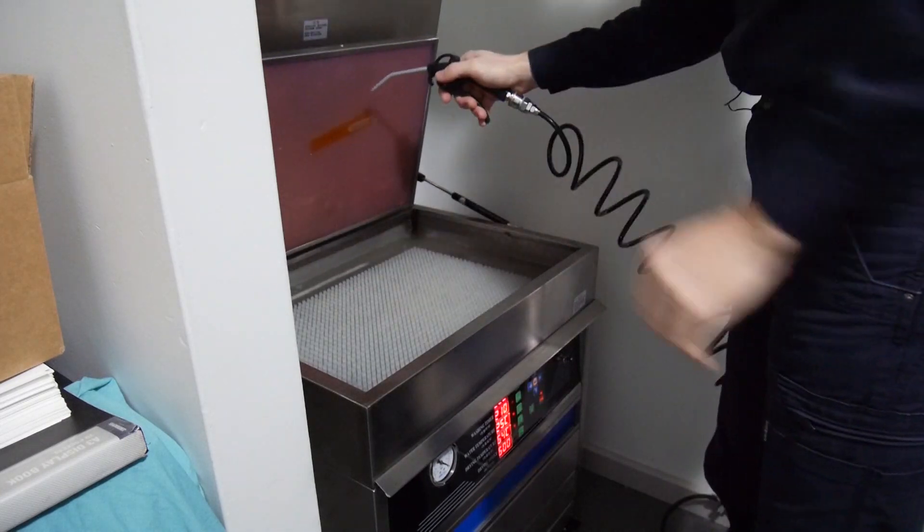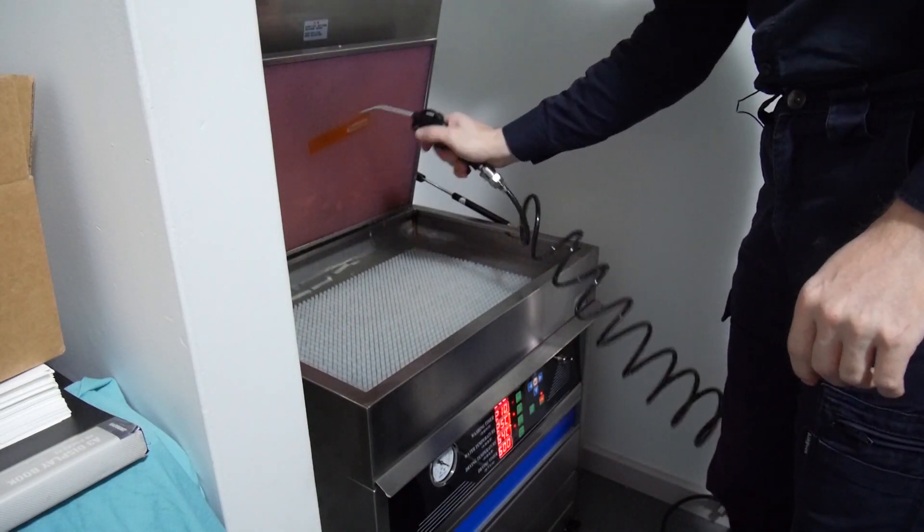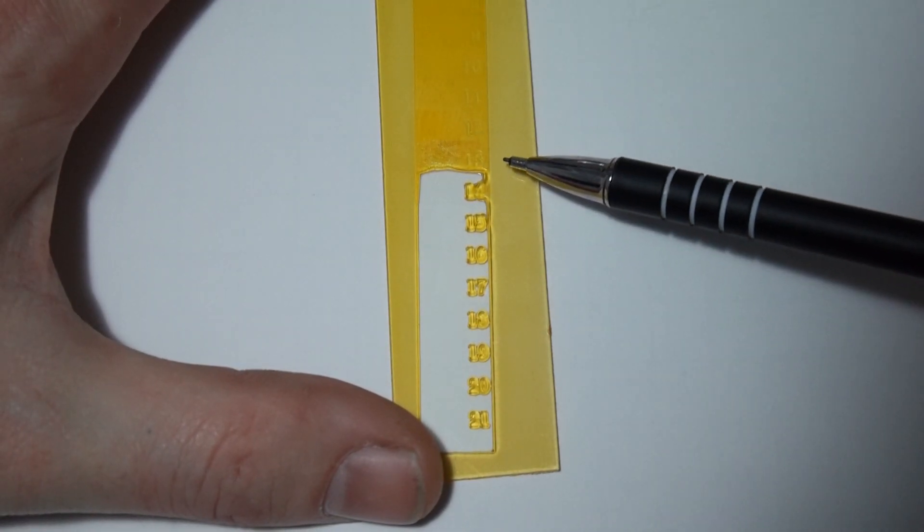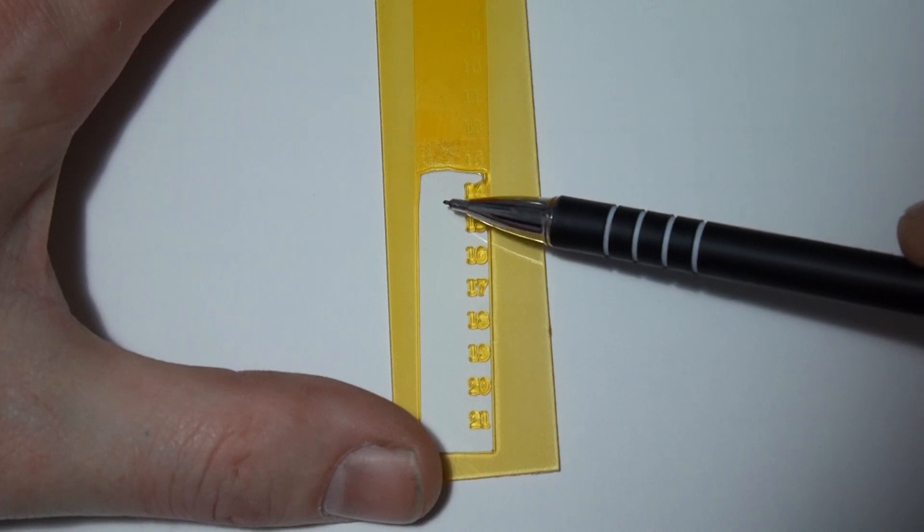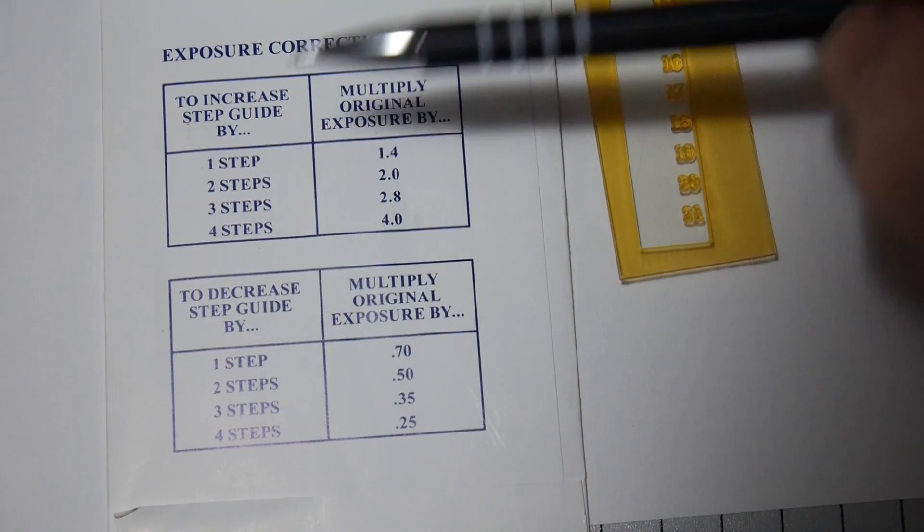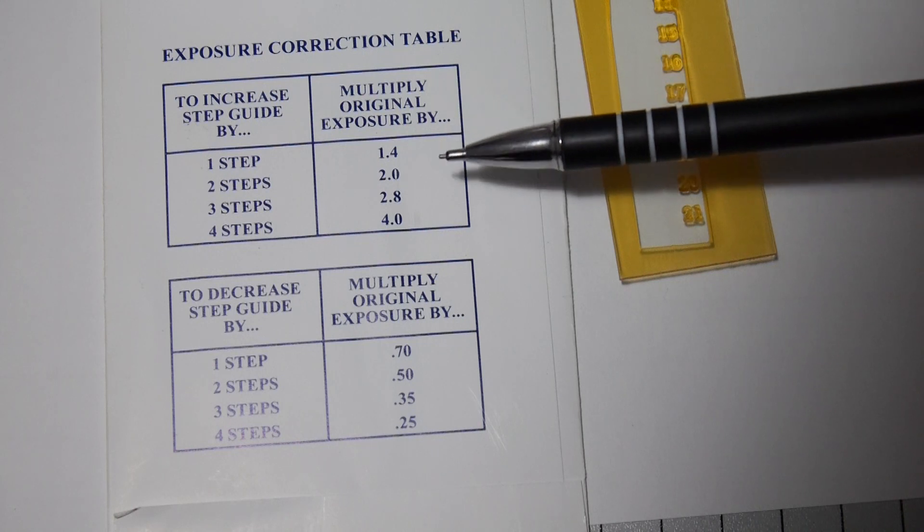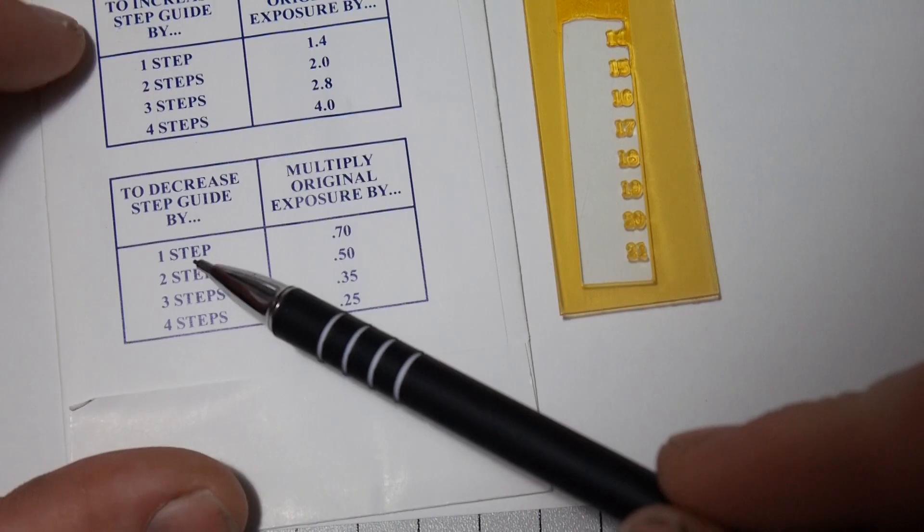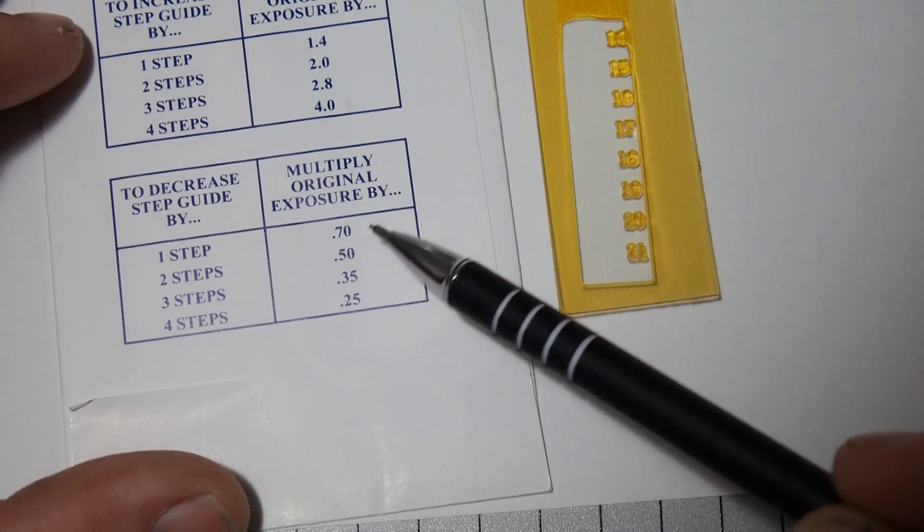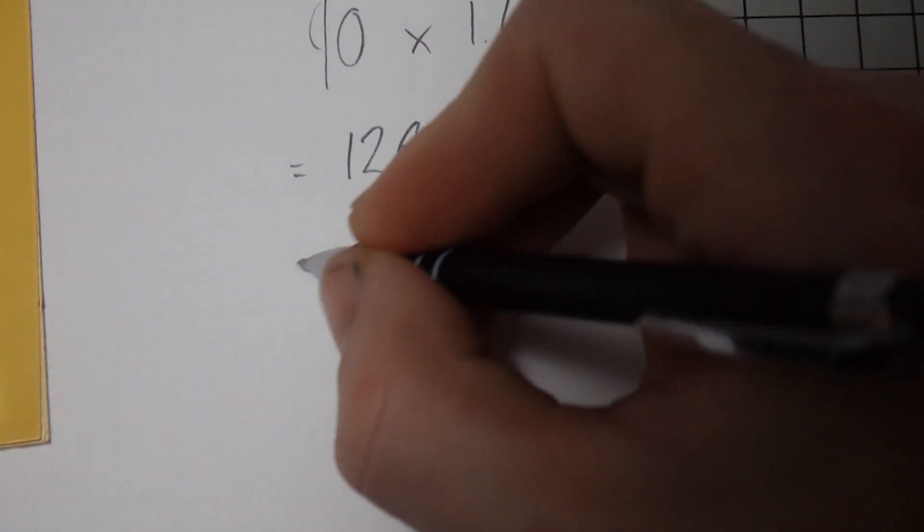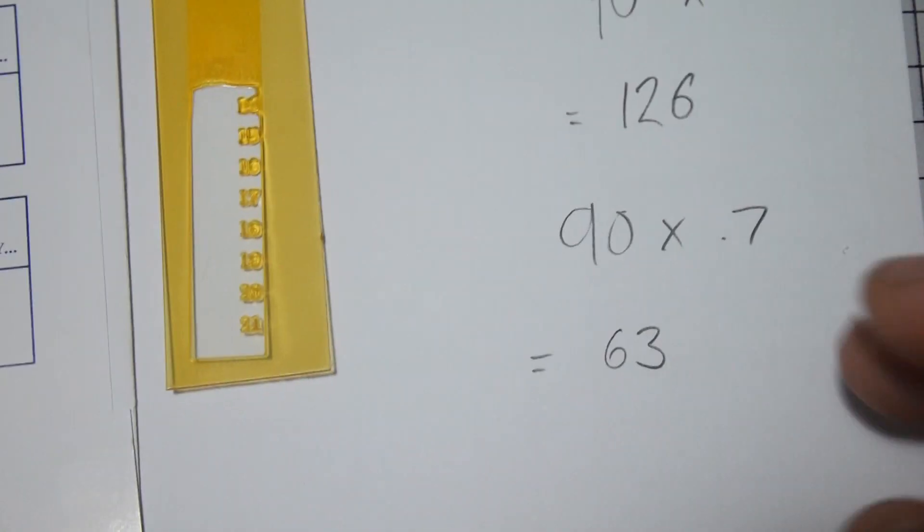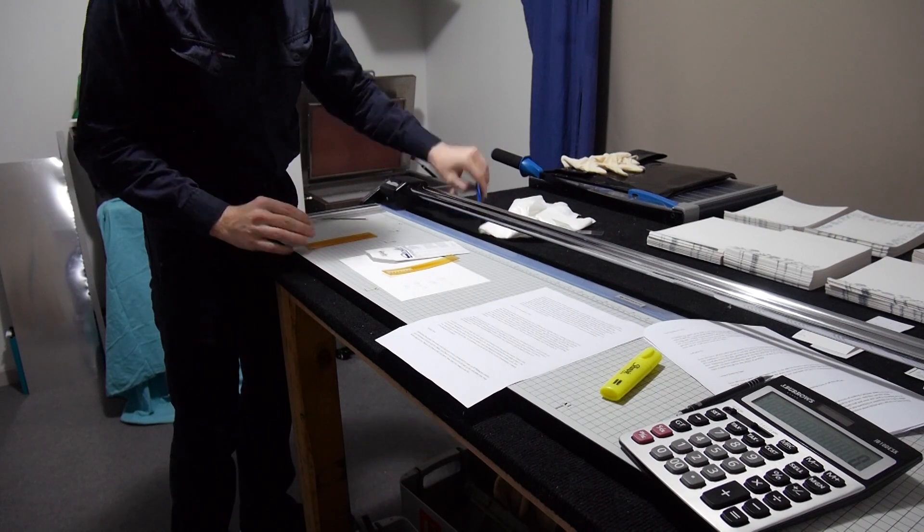Once it has been exposed give it a good washout. If you haven't calibrated your washout yet three minutes should be plenty. Here we can see that the Stouffer value is 13. You can tell because the 13 is barely washed out and the 14 is completely washed out. If we wanted to increase the value to a 14 we would have to multiply the original exposure time by 1.4. Since we exposed it for 90 seconds, 90 times 1.4 is 126. If we wanted to go back by one step to 12 we would have to multiply the original exposure time by 0.7. Since our original exposure time was 90 seconds we do 90 times 0.7 which is 63. We continue this process until we get the correct number.